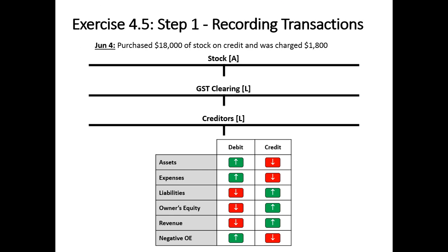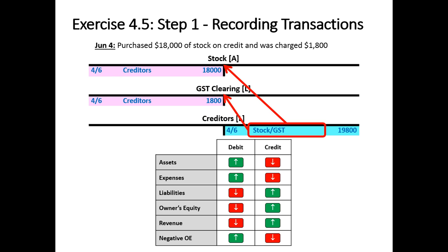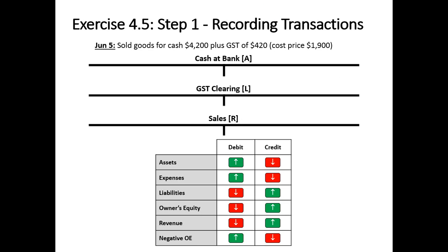Purchased $18,000 of stock on credit and was charged $1,800 GST. Stock is going up $18,000 and we're being charged GST — the entry is going to be the same. What's going to be different is instead of decreasing an asset in the form of cash, we're going to increase a liability called creditors. On the debit side we're going to reference creditors instead of cash at bank, and on the credit side our reference will be stock slash GST.